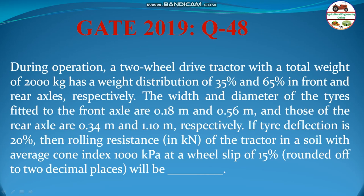Welcome students. Let us solve a problem from GATE 2019, question 48. During operation, a two-wheel drive tractor with a total weight of 2000 kg has a weight distribution of 35% in front and 65% in rear. The width and diameter of the front and rear tires are given. If tire deflection is 20%, then the rolling resistance of the tractor in soil with an average cone index of 1000 kilopascal and a wheel slip of 15% will be?